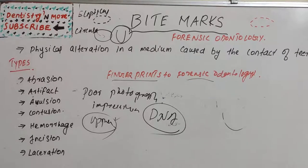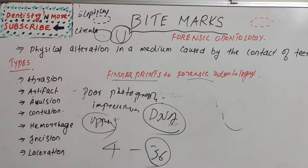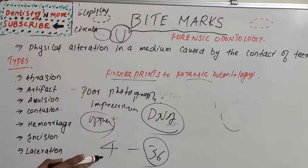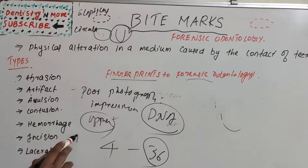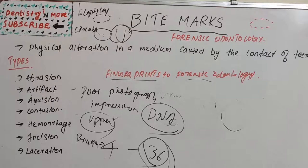The forensic dentist then takes measurements of each individual bite mark and records them, requiring many photographs due to the changing nature of bites. Bruising can appear 4 hours after a bite and disappear after 36 hours. Bite photography must be conducted precisely, using rulers and other scales to accurately depict the orientation, depth, and size of the bite. The photos are then magnified, enhanced, and corrected for any distortions.